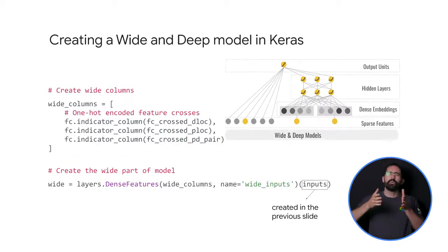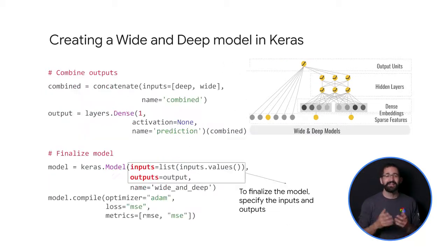We can also create the wide portion of the model. For example, using dense features, which produces a dense tensor based on a given amount of feature columns that you define. Lastly, how do you bring them both together? We combine the wide and deep portions and compile the model, as you see here.